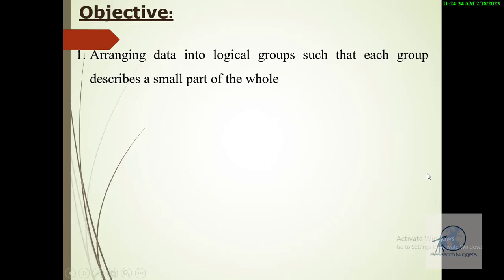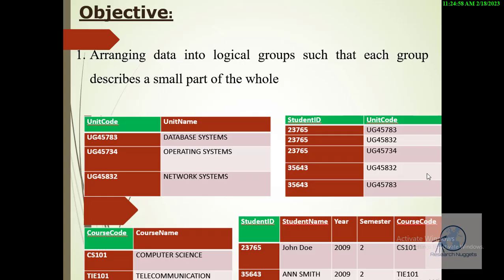The first objective is that a normalized database should ensure that the data is organized or arranged into logical groups, or what we can refer to as small relations, and that each of those particular relations will describe a small part of a whole. For example, you can see that in this given database we have four small relations and each particular relation is only describing or populating data that relates specifically to it. For example, we have the first group that is only capturing details to do with units, and the second one that is only capturing details to do with courses, and so forth.